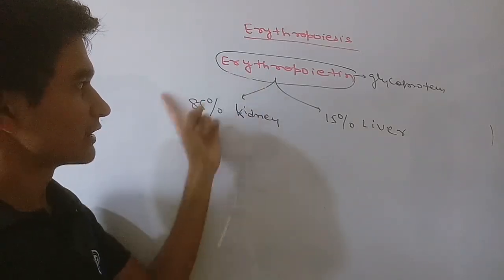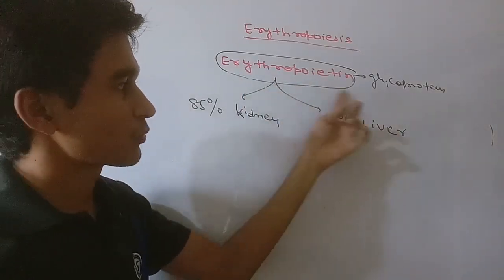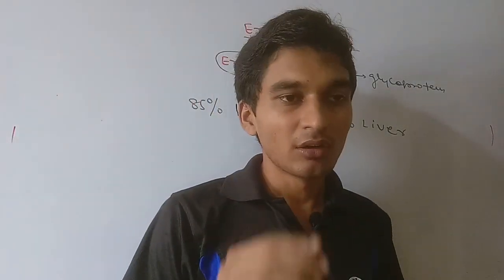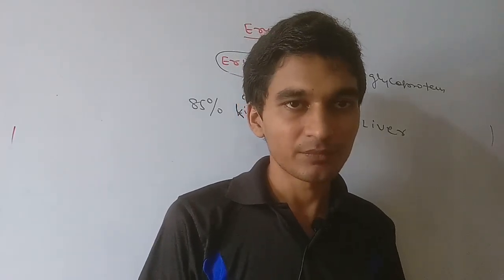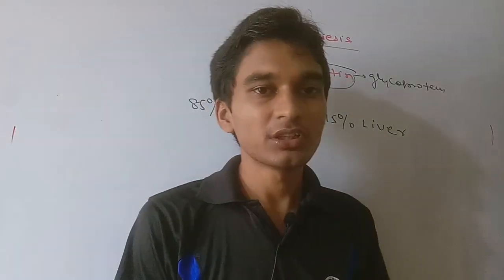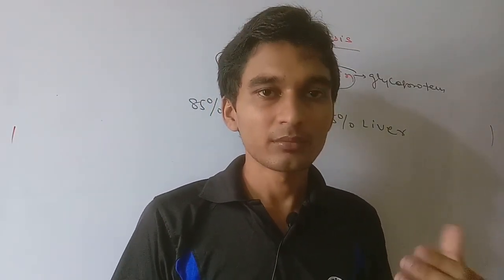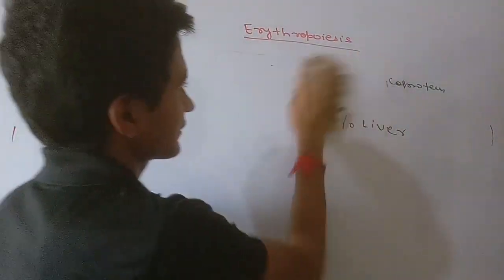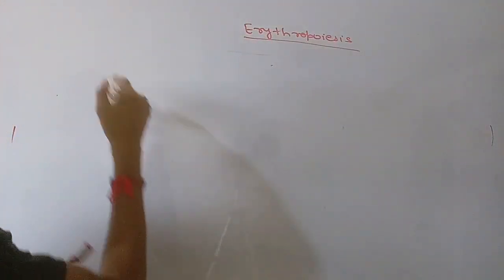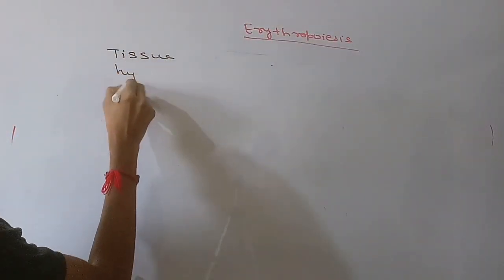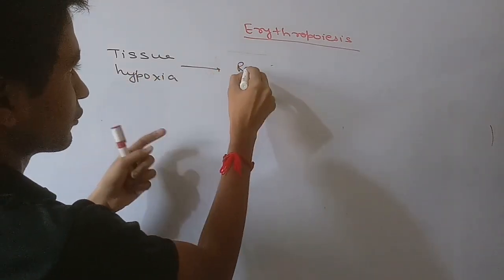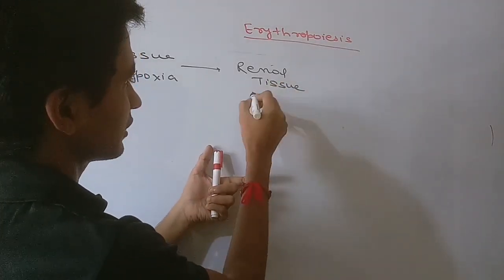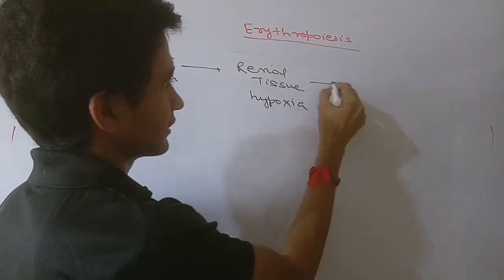The mechanism operates as follows: if there is tissue hypoxia, it will also cause renal tissue hypoxia because blood is not reaching the renal tissue in normal quantities. This renal tissue hypoxia leads to the formation of a factor known as Hypoxia Inducible Factor-1 (HIF-1).